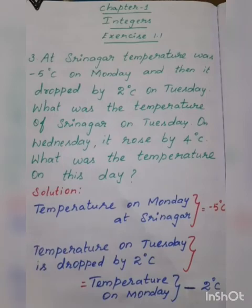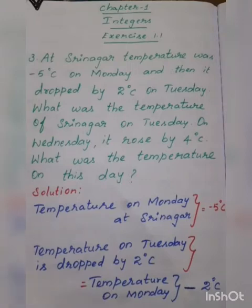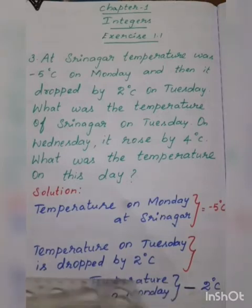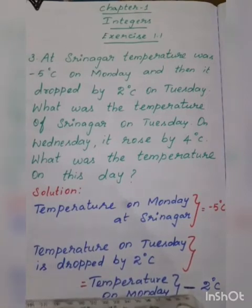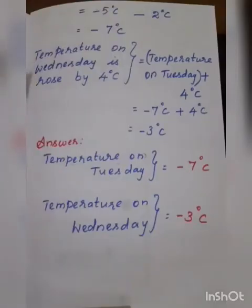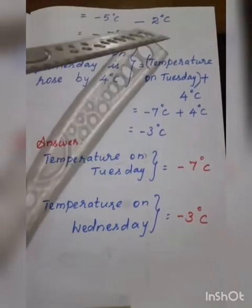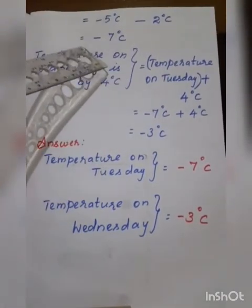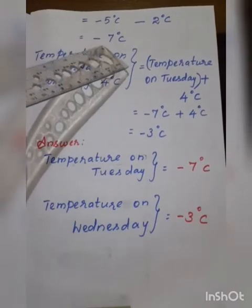Now we go to solution. The temperature on Monday at Srinagar is minus 5 degrees Celsius. The temperature on Tuesday dropped by 2 degrees Celsius, meaning decreased. So temperature on Monday minus 2 degrees Celsius. Both digits are negative numbers, so add the numbers and put the minus sign. The answer is minus 7 degrees Celsius.